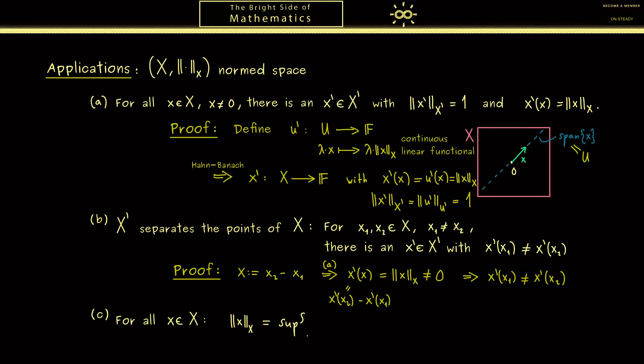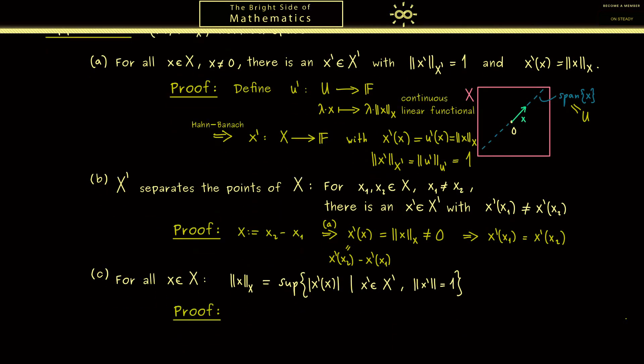More concretely the norm of x is given by the supremum where we put in all possible functionals x' where we can restrict ourselves to the ones that have norm 1. And then we just put in the vector x and look at the absolute value. Of course this should remind you of the definition of the operator norm but here it goes the other way around. Nevertheless we can use the operator norm to prove the whole thing.